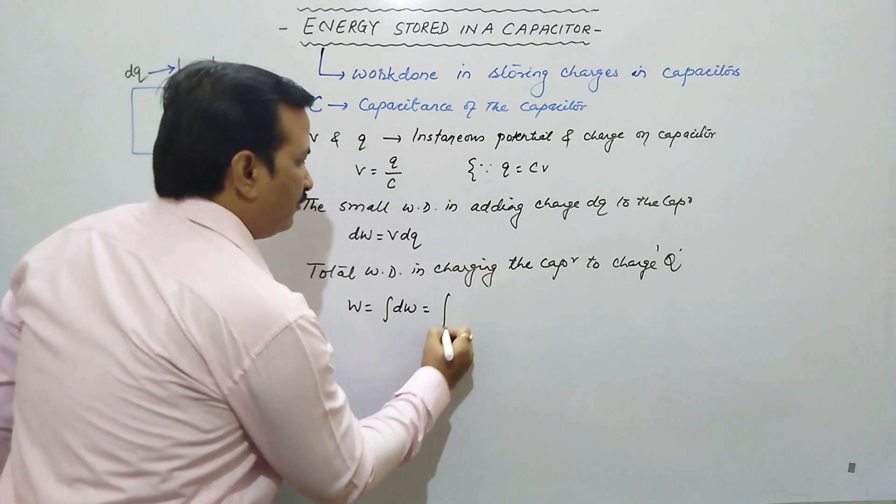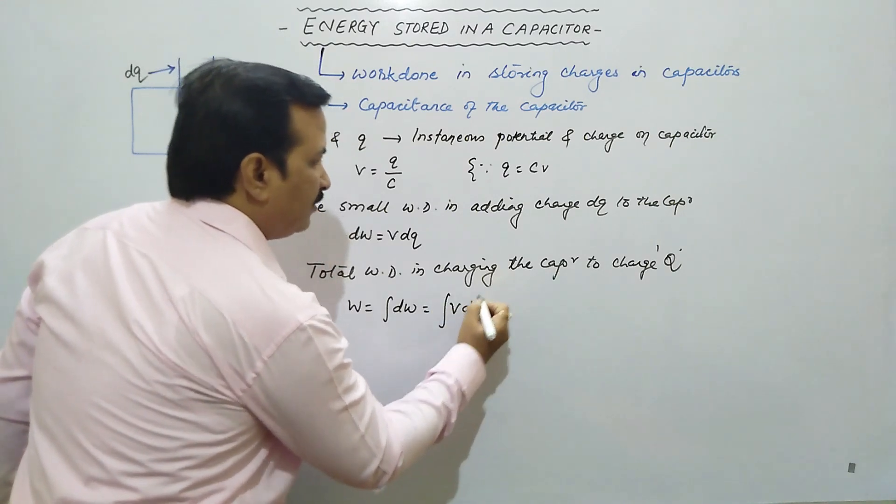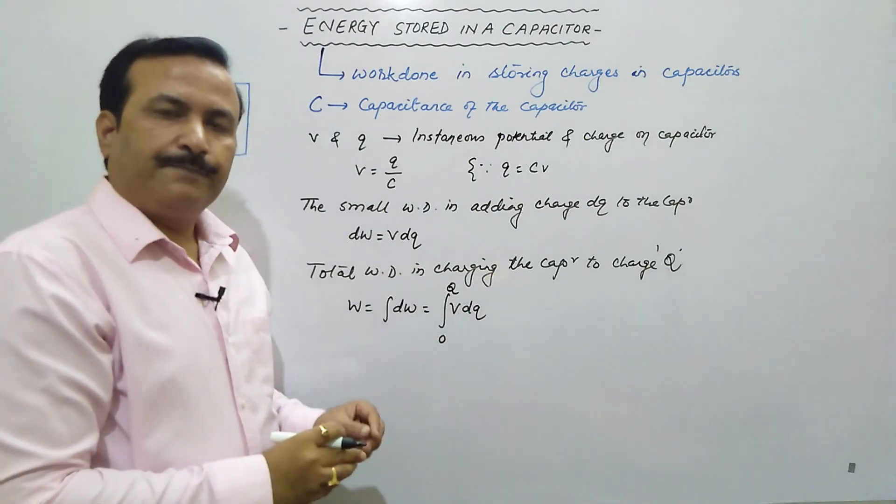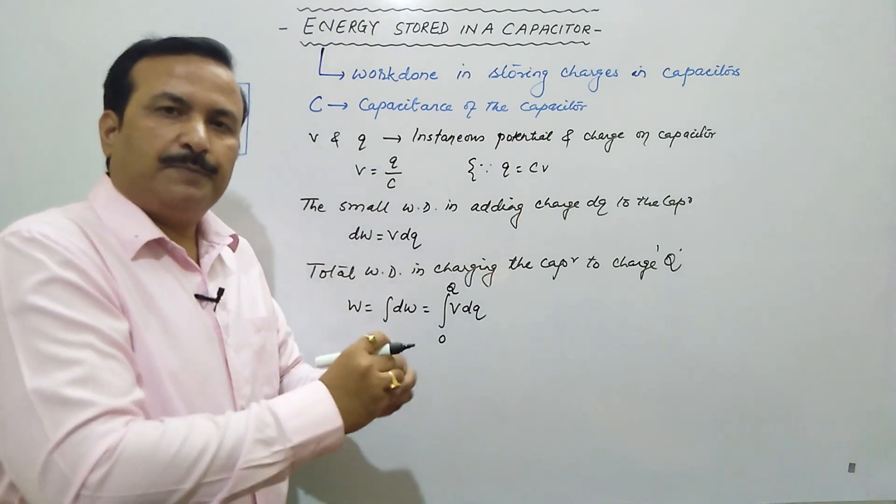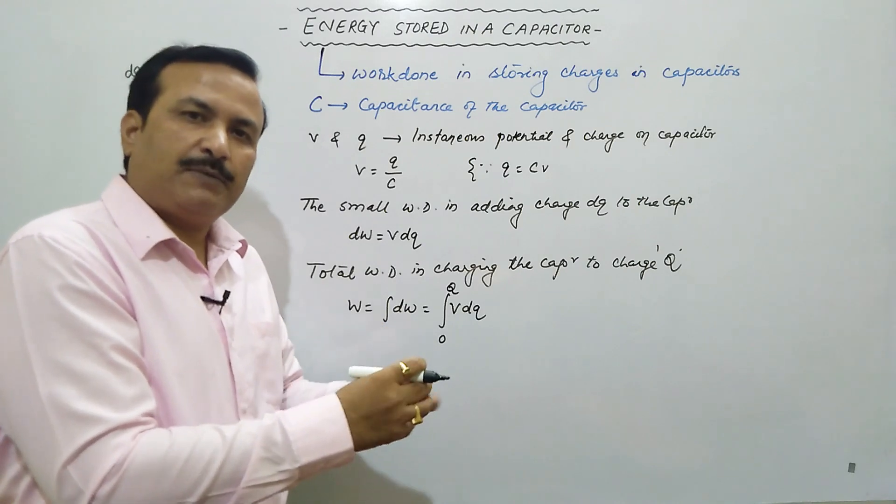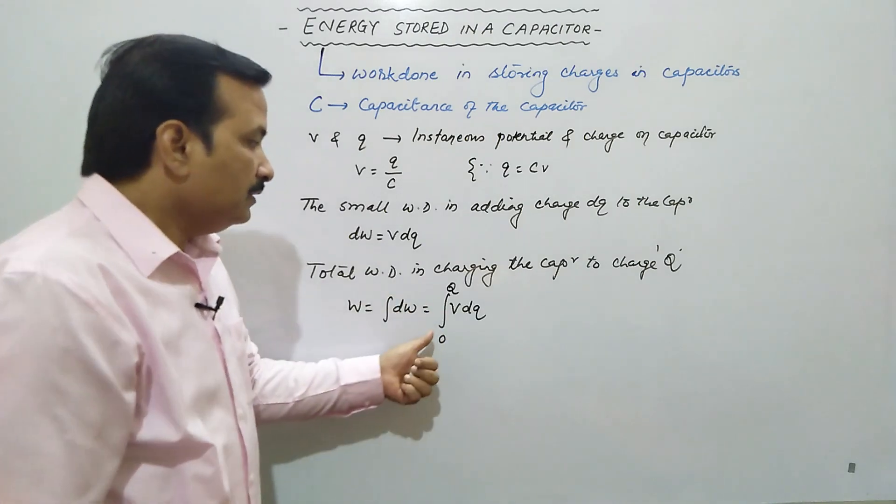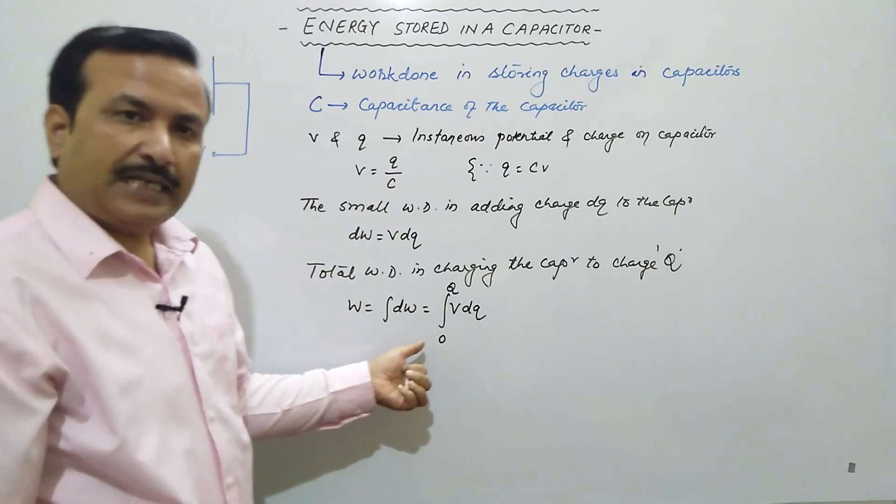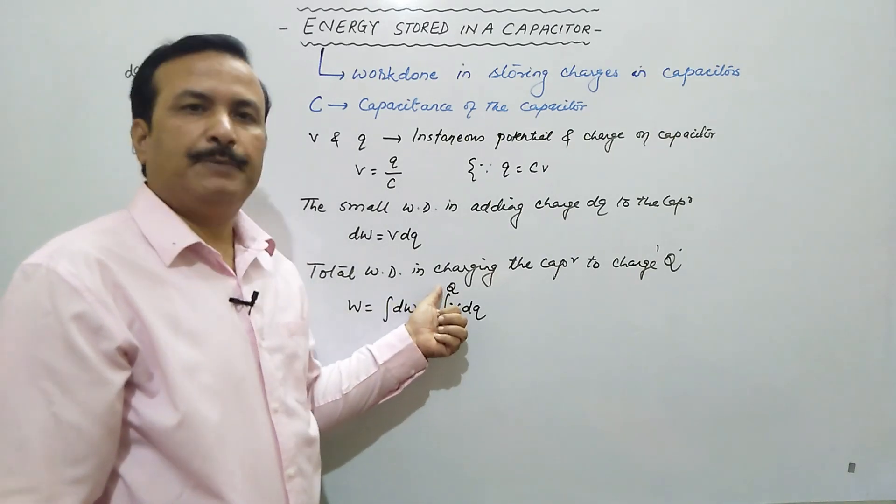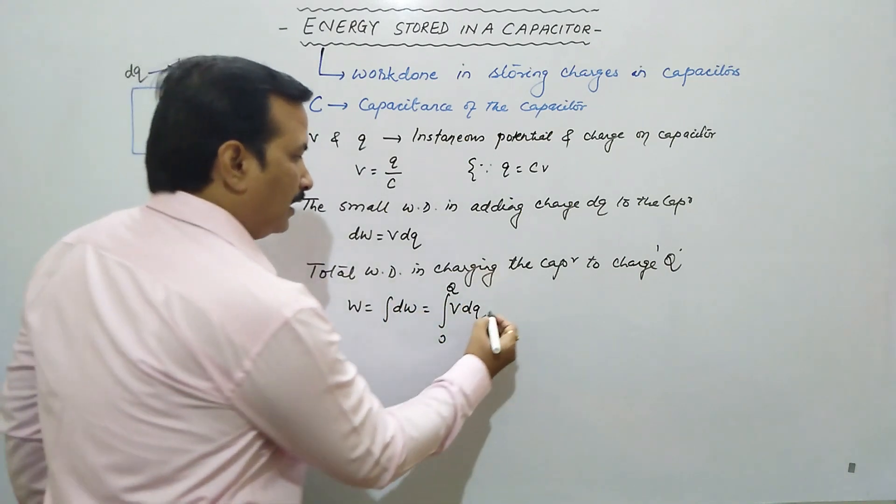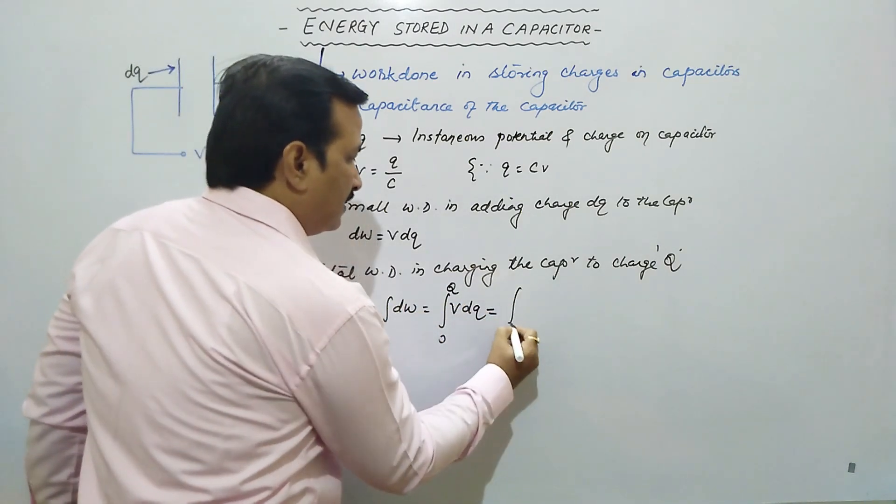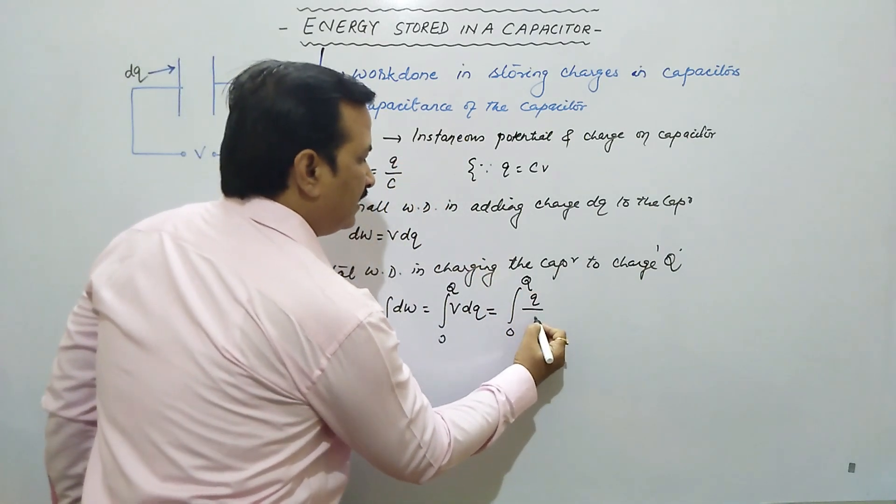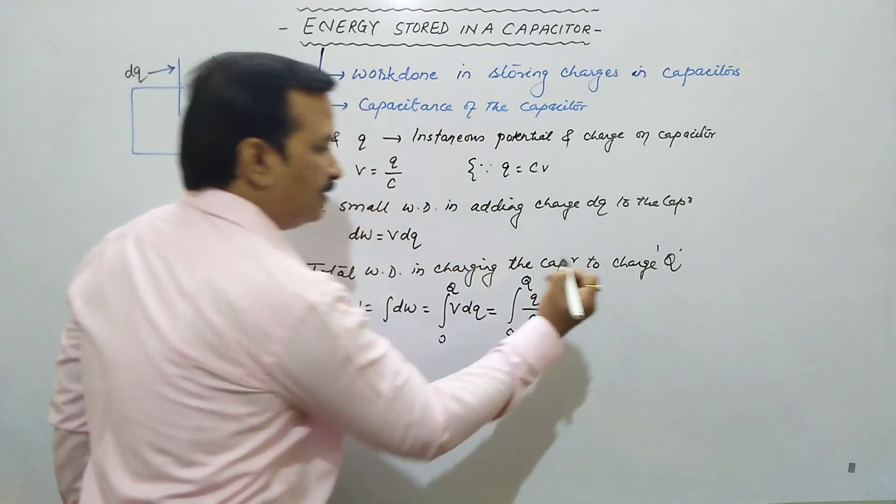Integration DW which is equal to integration VDQ from 0 to Q. We assume initially it was zero. When you added one, there was repulsion. When adding the second, there was repulsion, so work had to be done. So for total work done, from where to where are we charging it? Up to capital Q. We already have the value of V, so we can put Q by C into DQ.